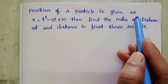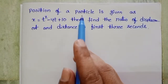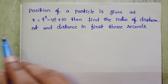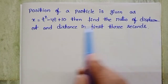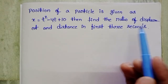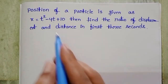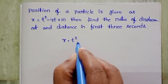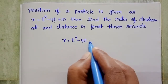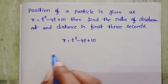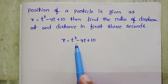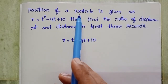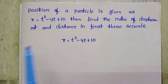Position of a particle is given as x equals t squared minus 4t plus 10. Find the ratio of displacement and distance in the first 3 seconds.